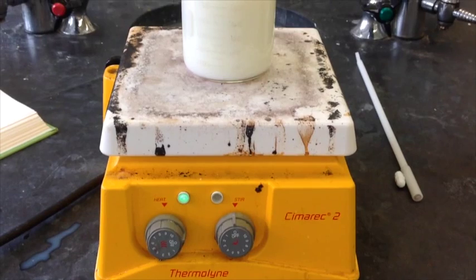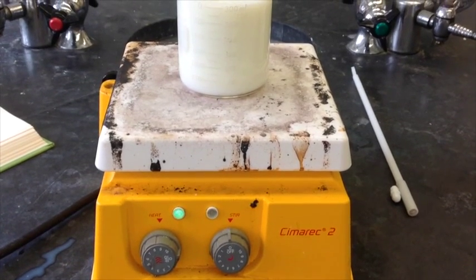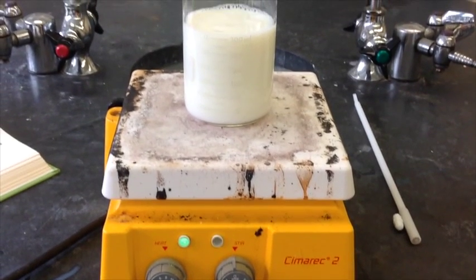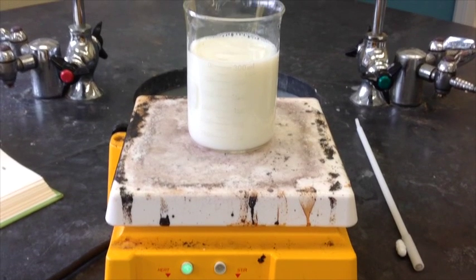Casein is the material you need for this experiment, so I'm going to show you how to extract it. Step 1: Pour 300 ml of organic skim milk into a beaker, then heat until simmering.